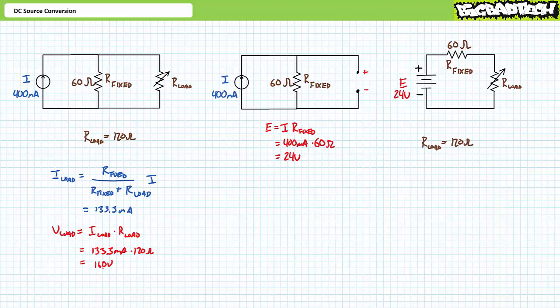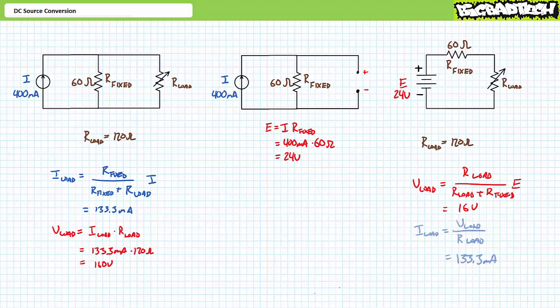Our substitute configuration is a perfect setup for the DC voltage divider rule. With the load resistor set to 120 ohms, we know the applied voltage and both resistances in a series combination. An application of the DC voltage divider rule demonstrates voltage across the variable load resistor will be 16 volts. A subsequent application of Ohm's law demonstrates current through the variable load resistor will be 133.3 milliamperes. Equivalency has been maintained, and the load resistance is none the wiser.